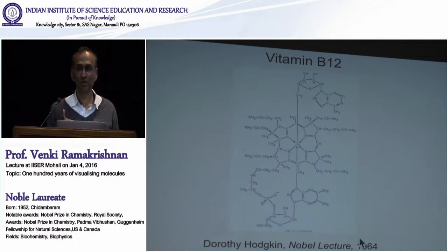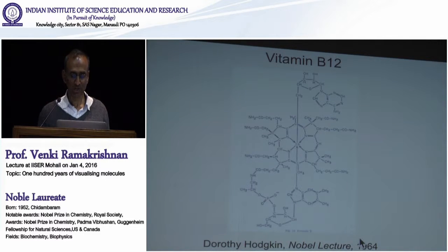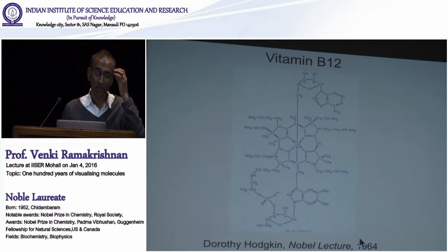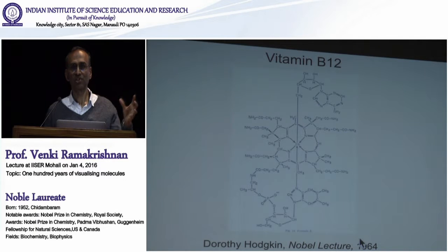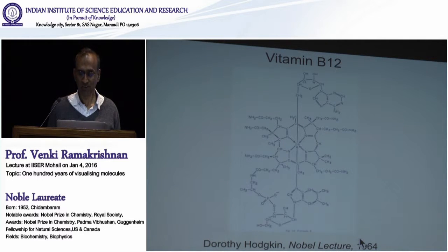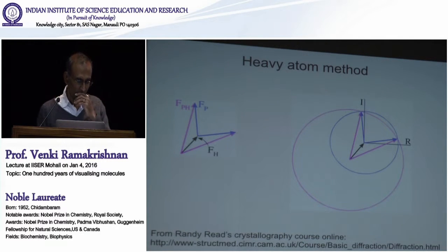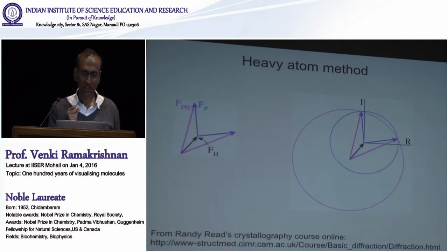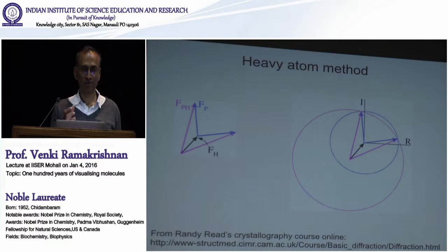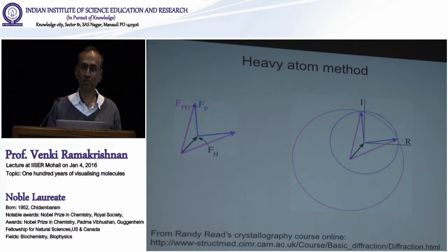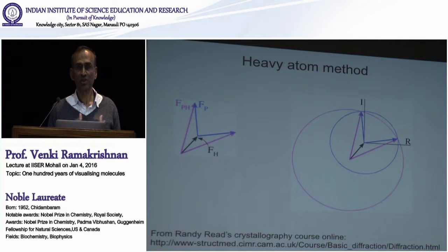The amount of scattering from those compounds at the time was not huge. It turns out you can use synchrotrons, but in those days the excess scattering didn't seem to be very high. This led to an idea called the heavy atom isomorphous replacement method, invented by Max Perutz along with his PhD student and colleague John Kendrew.